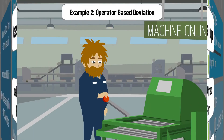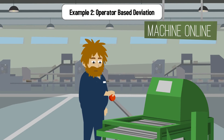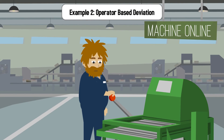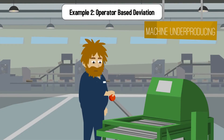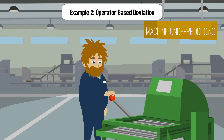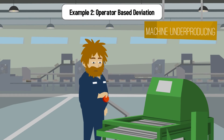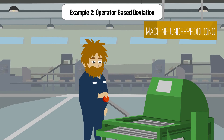In the second example, we will assume that the thread quality is fine. However, there is a new operator assigned to the machine. Since the operator is new to his position, he is not fully trained and is unaware of the company's production standards. Therefore, he inputs thread into the machine slower than usual, so during his shift the equipment is under-producing.